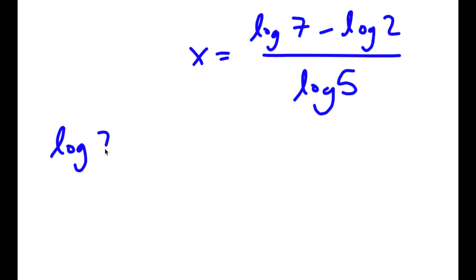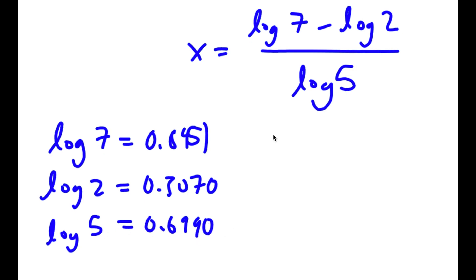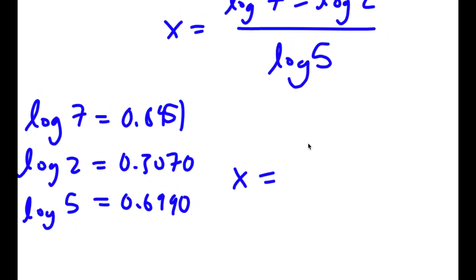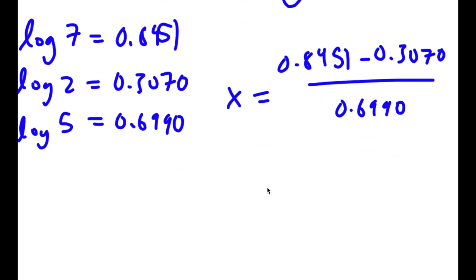Now, log 7 is equal to 0.8451, log 2 is equal to 0.3070, and log 5 is equal to 0.6990. So x is equal to 0.8451 minus 0.3070 over 0.6990, which is equal to 0.7784.